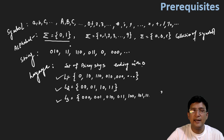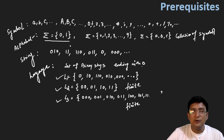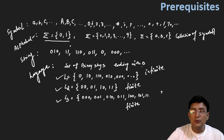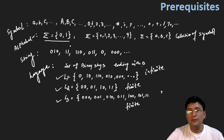Among these, some languages are finite languages. For example, L2 is a finite language — this language's set has only 4 strings. Similarly, L3 is also a finite language because its set has 8 strings. But the L1 set — the set of all binary strings ending with 0 — that language denotes an infinite set, because we cannot put any limit on the string length. So this is an infinite set.